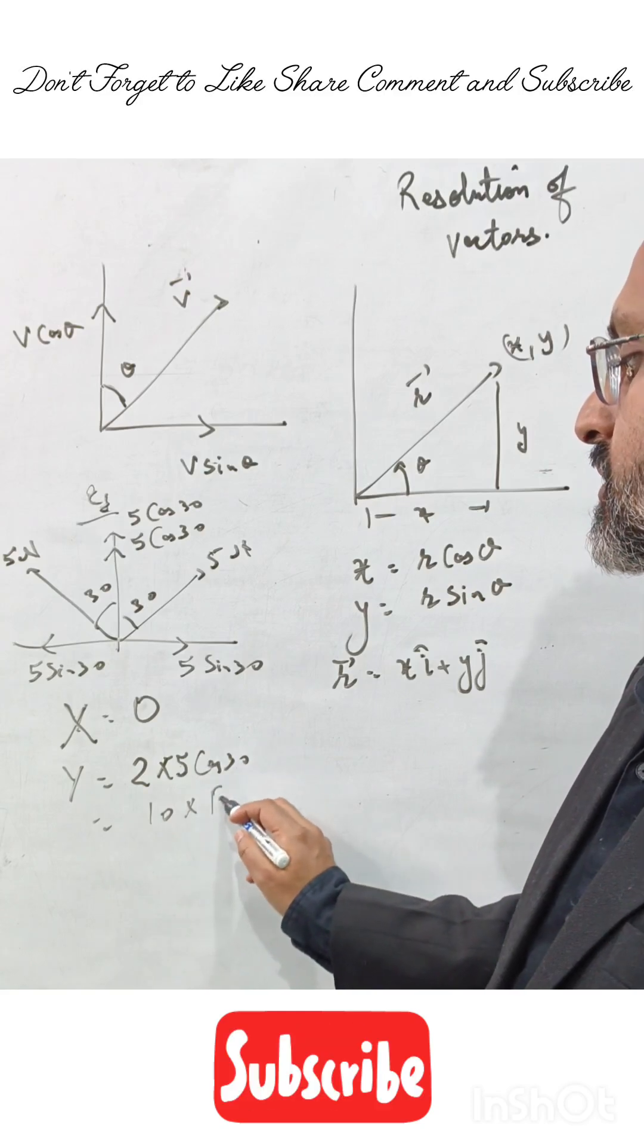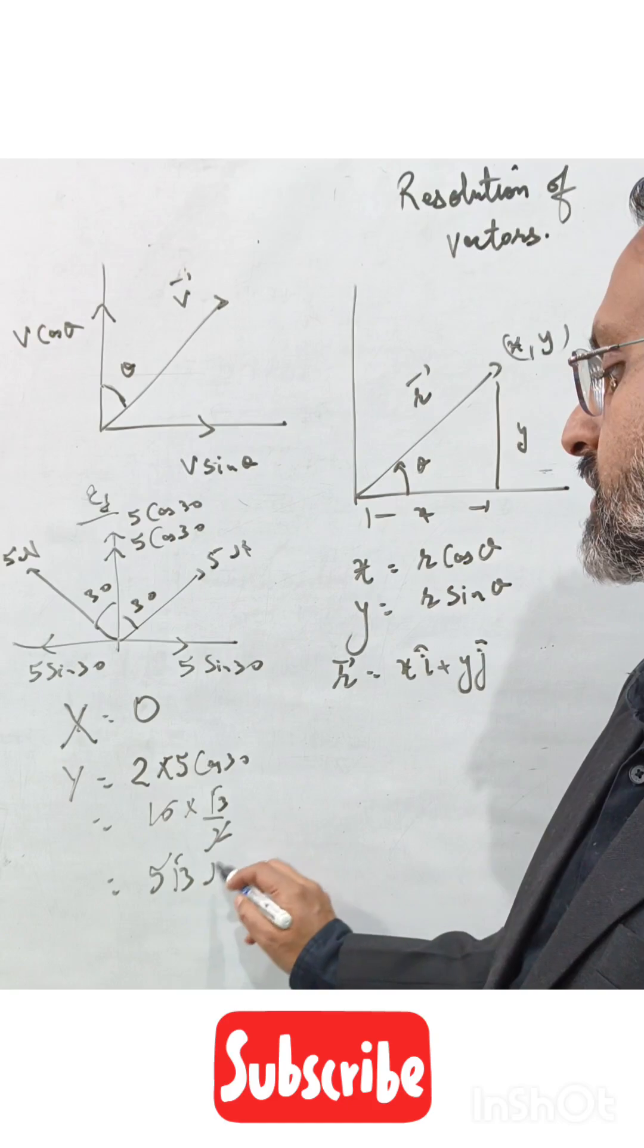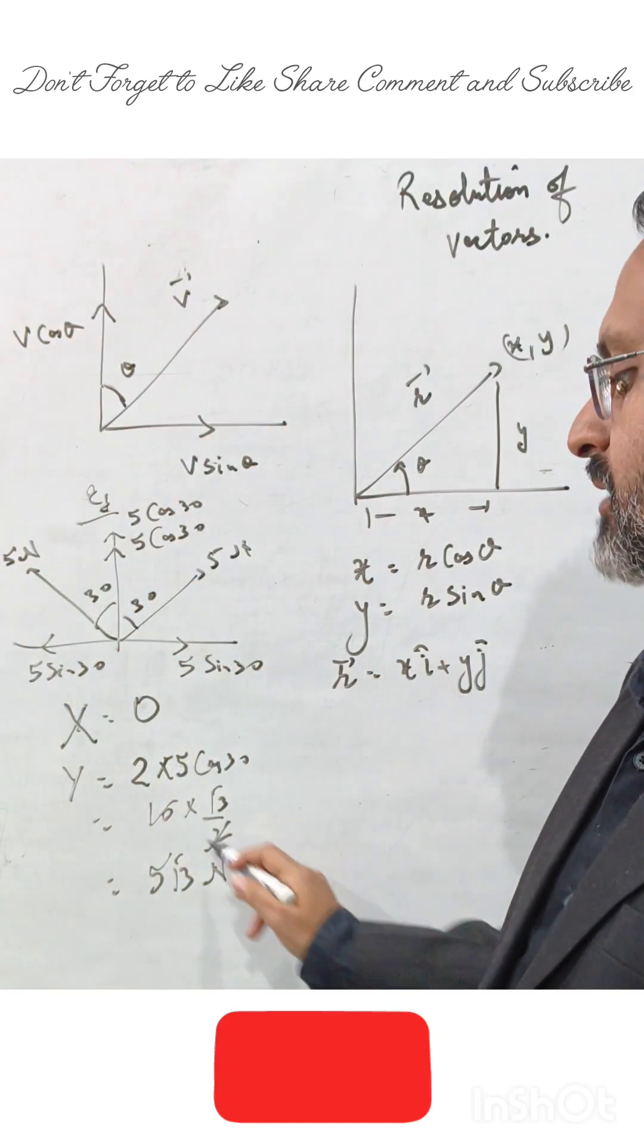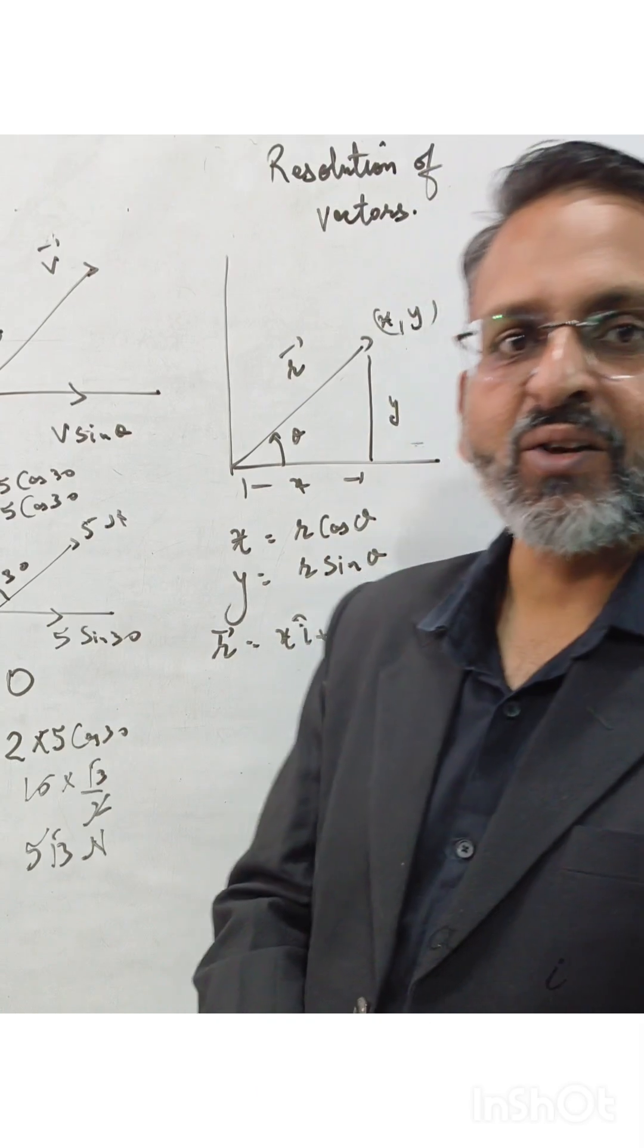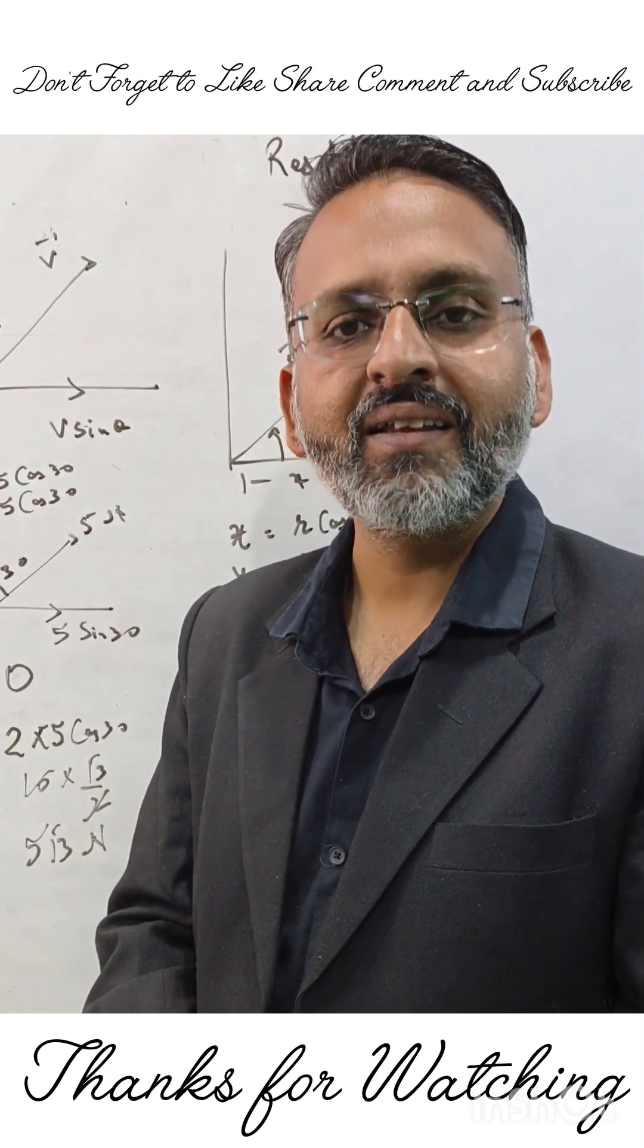The value of cos 30 is root 3 by 2, so we get the result: 5 root 3 newtons will be our force. The resultant of these two forces will be 5 root 3 newtons. You can continue the resolution of vectors and find the resultant. Do not forget to like, share, and subscribe.